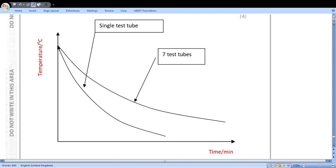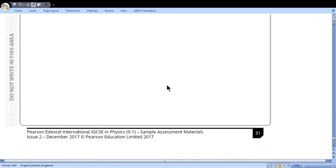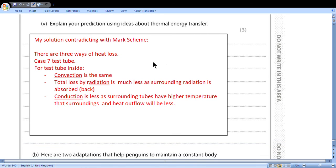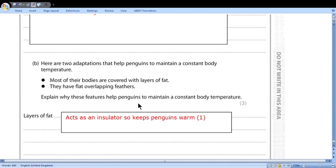Predict how the temperature change for the single test tube will compare to the temperature change for the group of test tubes. The single test tube will cool faster. Draw a sketch graph for the results you predict the student will obtain. Label and use the axes below. So we'll have temperature over time. Temperature slash degrees Celsius over time slash minute. So two graphs start from the same point because we put the same water at the beginning. And the single test tube goes steeper than seven test tubes all over. Now explain your prediction using ideas about thermal energy transfer. My solution contradicts the mark scheme. Be attentive. So I think that there are three ways of heat loss. In case of seven test tubes, for test tubes inside, convection is the same because the same tube, the same area of air above and so on. Total loss by radiation is much less as surrounding radiation is absorbed back. Conduction is less as surrounding tubes have higher temperature than surroundings. And heat outflow will be less.